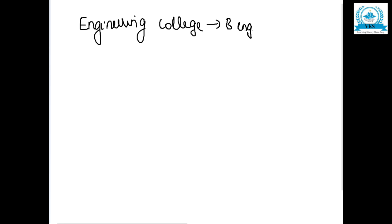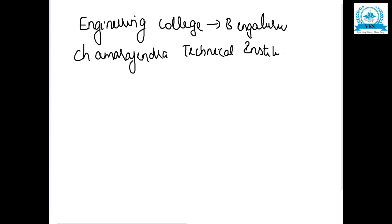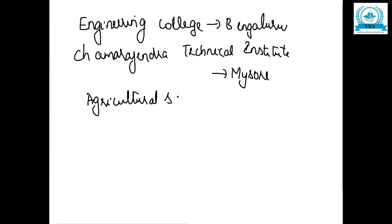To encourage technical education, he started the Chamrajendra Technical Institute at Mysore. He also established an agricultural school at Hebbal in Bangalore.